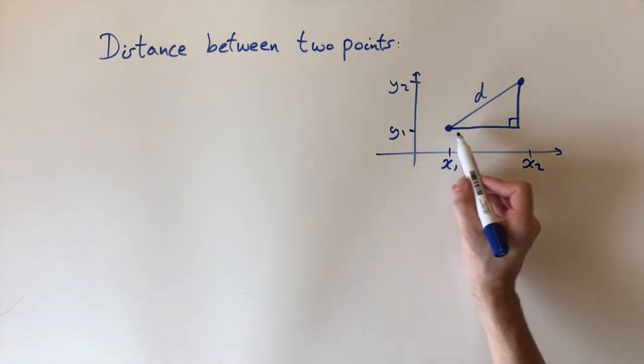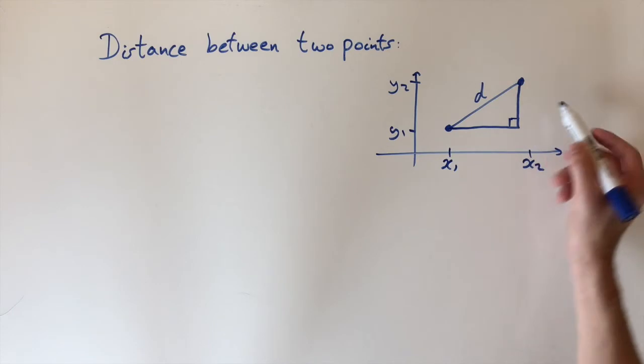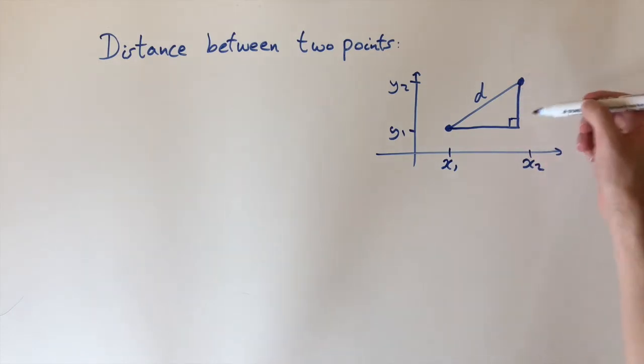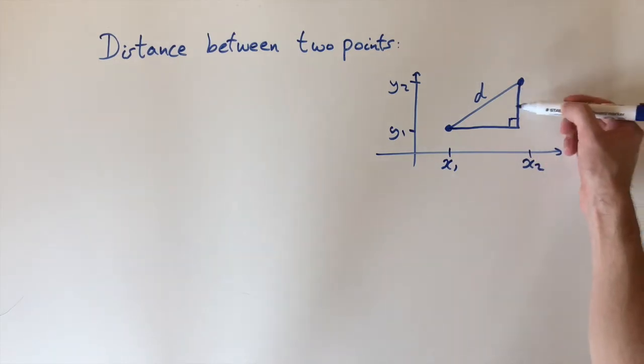And the reason this is useful is because we can work out the length of this line and the length of this line. And then we can just apply Pythagoras' theorem because we have a right-angled triangle.